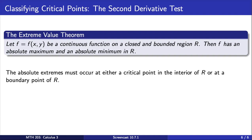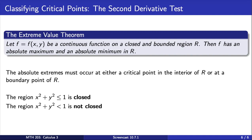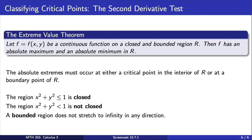Just a note here on what we mean by closed and bounded in the extreme value theorem. This region here is closed because it contains the points on the boundary — that is, it contains points such that x² + y² = 1. On the other hand, this region is not closed because it does not contain the points on the boundary, where x² + y² = 1. Lastly, when we say a function is bounded, we mean that it does not stretch to infinity in any direction.